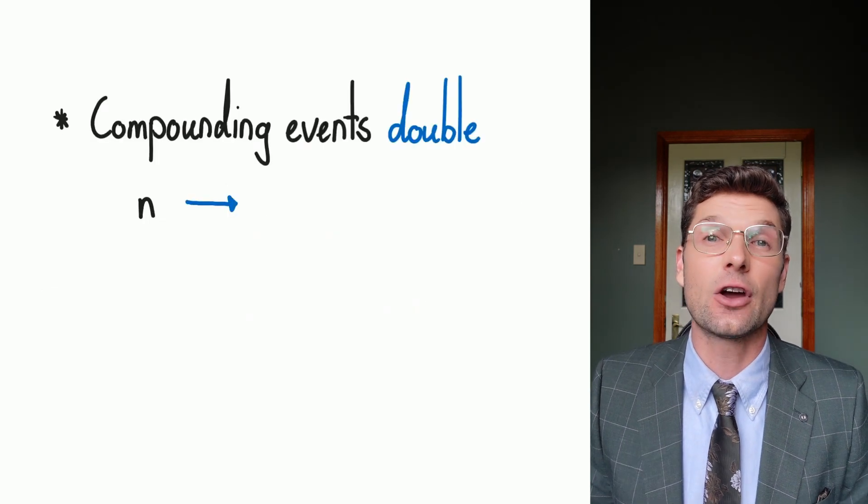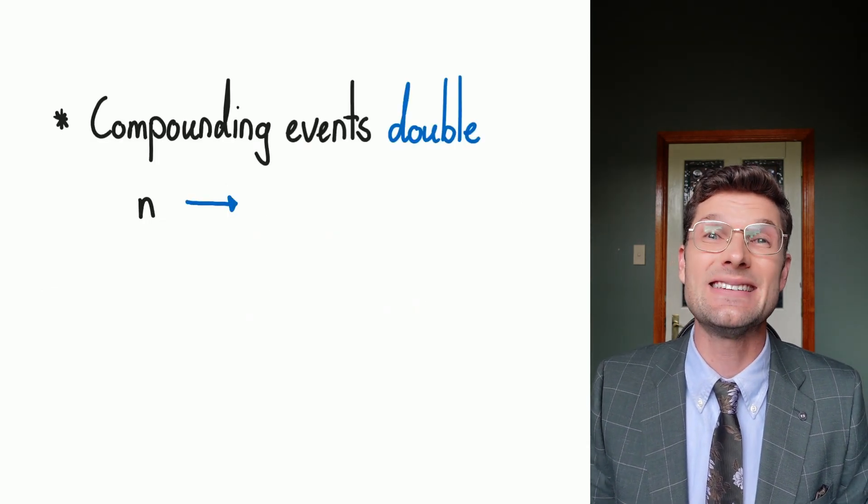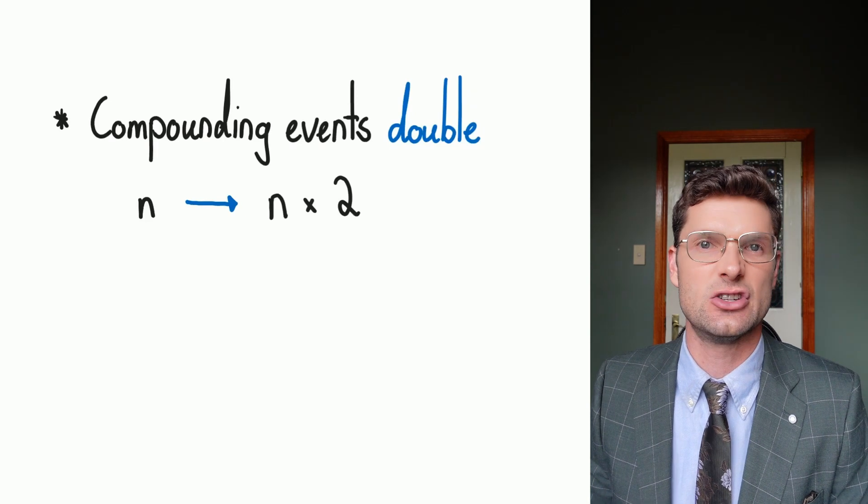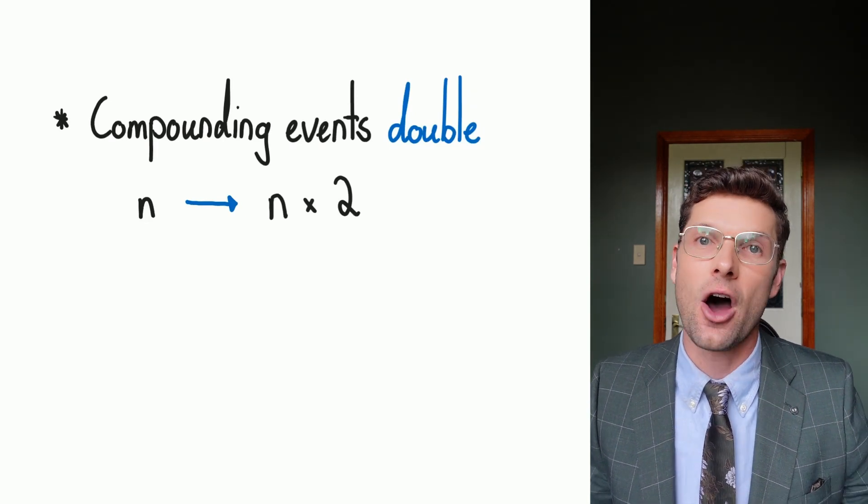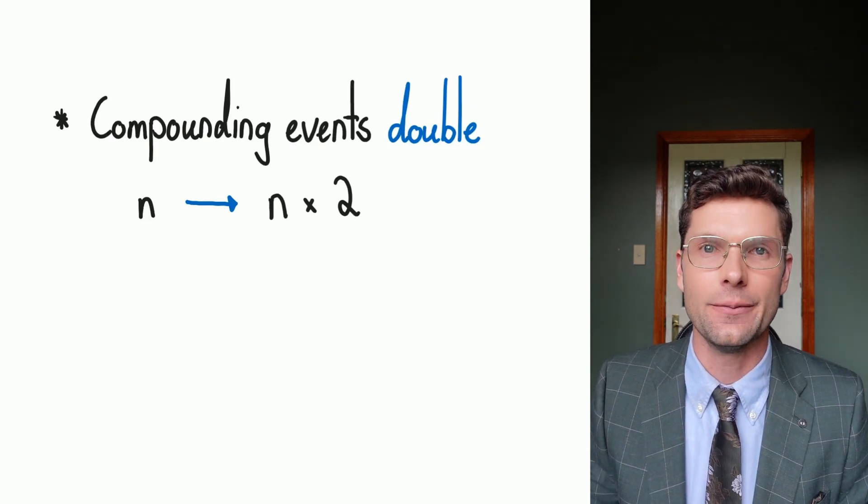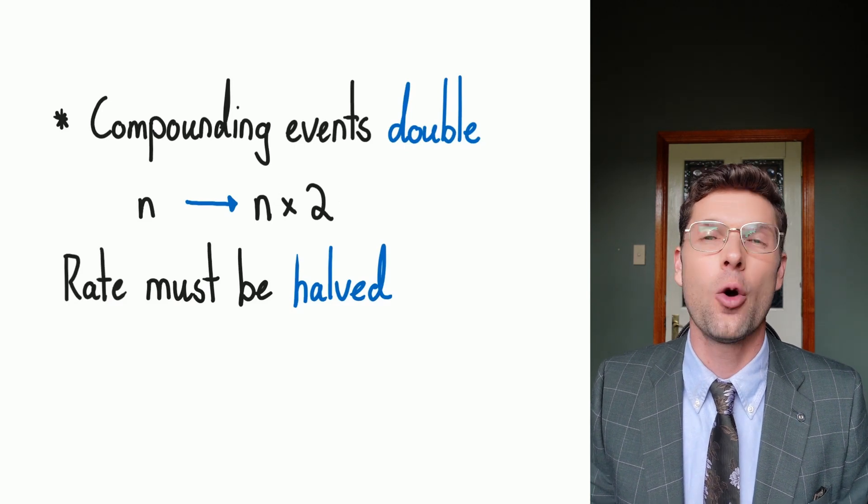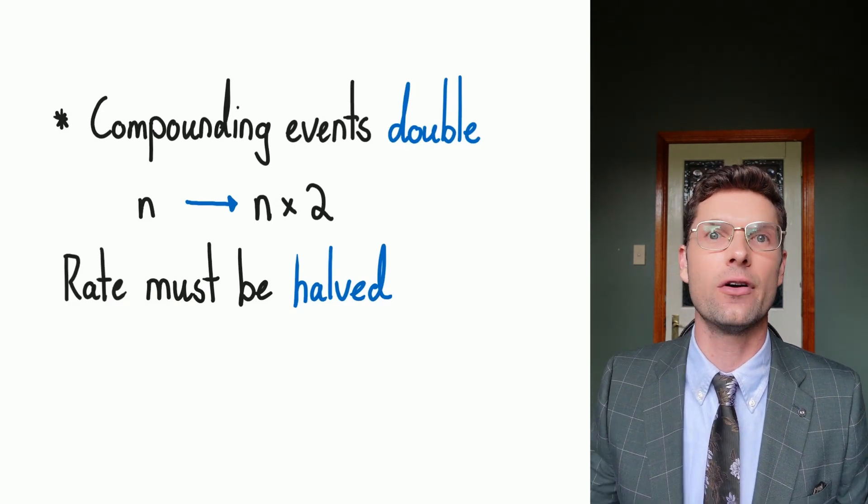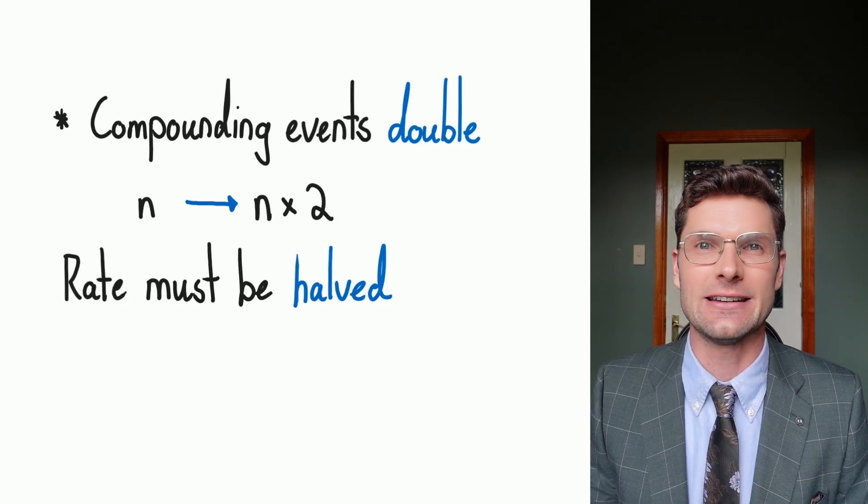So in our biannual example, the compounding events double, which means that n becomes n times 2. There are twice as many times that this thing ticks over. But if we're getting paid half yearly, we don't get the whole rate for every single compounding period. We get half of the rate.